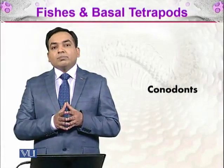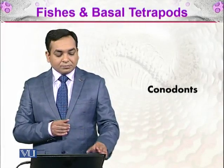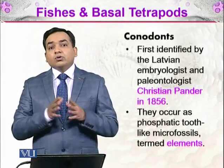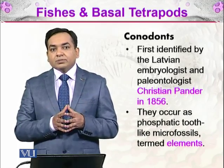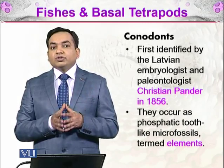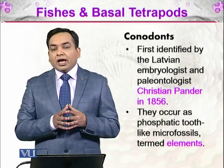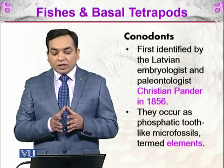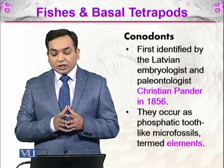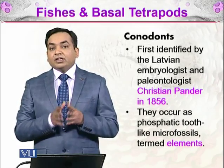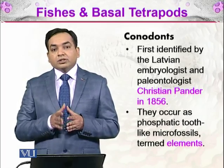In the fish and basal tetrapods, we will be discussing the conodonts. What are the conodonts? The conodonts are ancient, now extinct organisms, or animals which resembled the eel. They were ancient fishes and had no jaws. These were first identified by Latvian embryologist and paleontologist Christian Pander in 1856. They occur as phosphatic tooth-like microfossil elements.